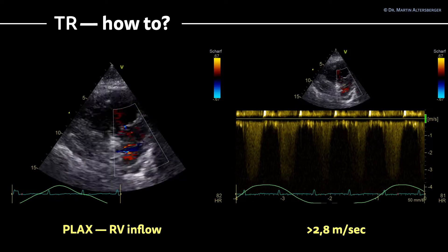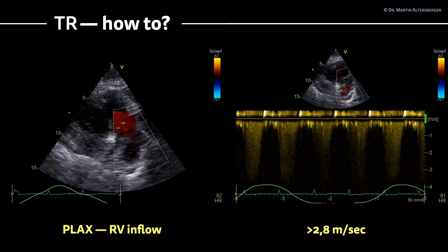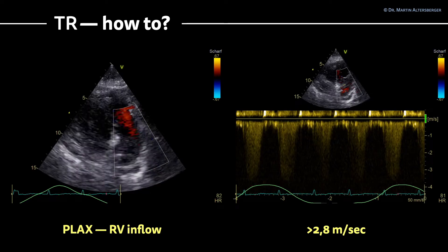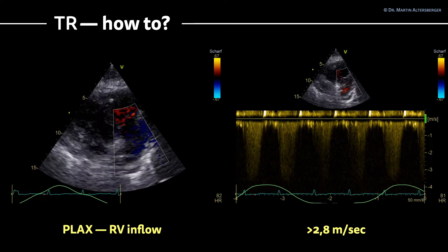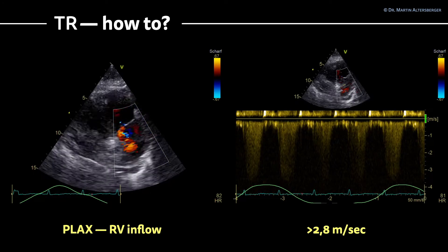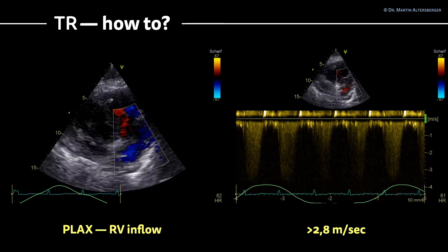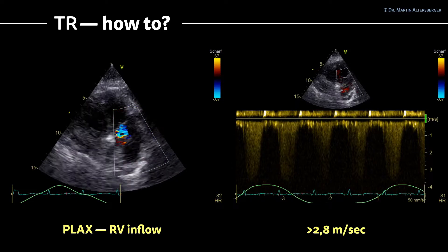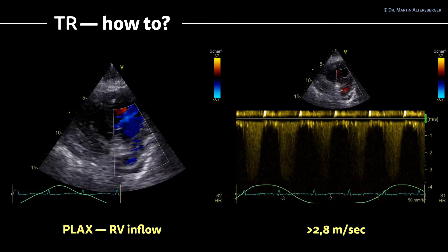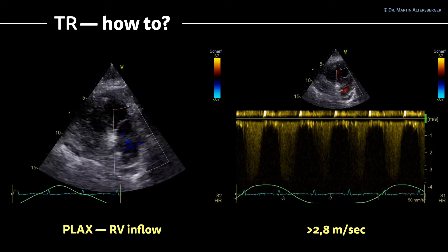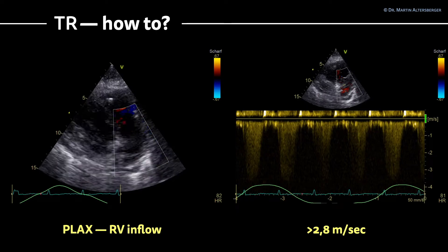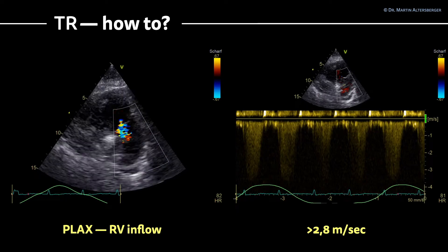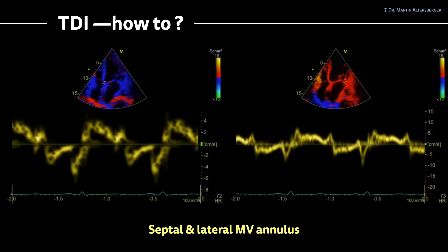Try it in all the views and compare your measurements to get the most accurate peak measurement of the tricuspid regurgitation. This is important to correctly evaluate the systolic pulmonary arterial pressure. To move on to the next measurement, we have to understand how to perform tissue Doppler imaging of the mitral valve annulus.